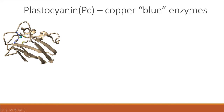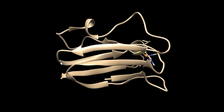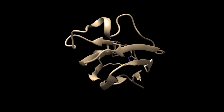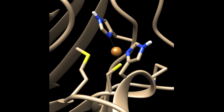Our next example is the plastocyanin protein, a member of the well-studied copper-blue enzyme family, named so due to its ligand-metal charge transfer transition band emitting in the blue wavelength region. It is significantly larger and more complex than the rubredoxin, with several repeating beta-sheet sections housing the active site. The active site itself has a heavily distorted, or strained, tetrahedral geometry, and consists of a copper centre coordinated to two histidines, one cysteine and a methionine residue.